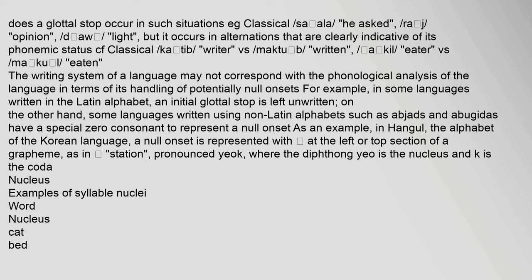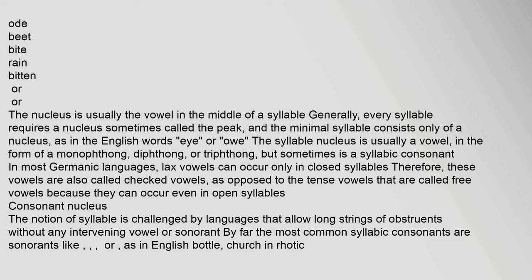The nucleus is usually the vowel in the middle of a syllable. Generally, every syllable requires a nucleus — sometimes called the peak — and the minimal syllable consists only of a nucleus, as in the English words 'I' or 'O.' The syllable nucleus is usually a vowel, in the form of a monophthong, diphthong, or triphthong, but sometimes a syllabic consonant. In most Germanic languages, lax vowels can occur only in closed syllables and are therefore called checked vowels, as opposed to tense or free vowels that can occur even in open syllables.